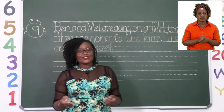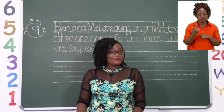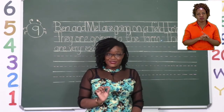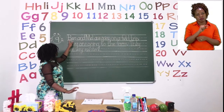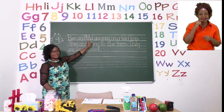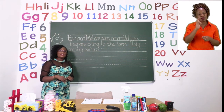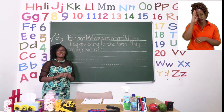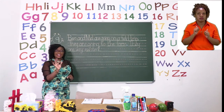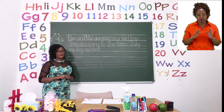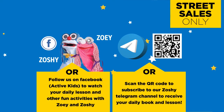I want you to continue the rest of the punctuation for the sentences by yourself. Remember, when you are starting a new sentence, you need to put a capital letter — but sometimes it is about the name of the person, and in that case you also need a capital letter. When you are ending your sentence, don't forget to put a full stop. Make sure that you space your letters carefully, your words carefully, and keep the same size for each letter. I'm going to see you when you are done after the advert break. Follow us on MyZone Facebook, Active Kids, to watch your daily lesson and other fun activities with Zoe and Zoshi.